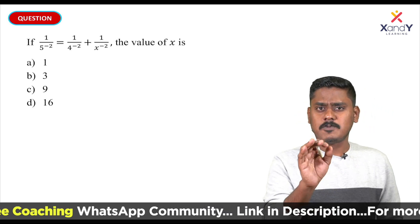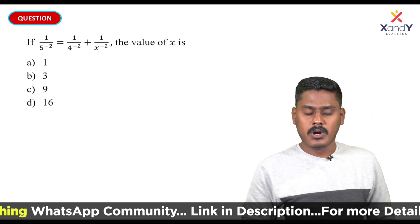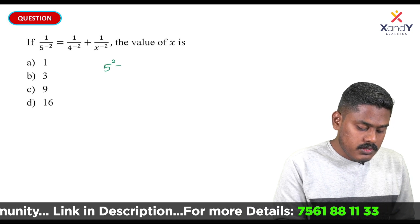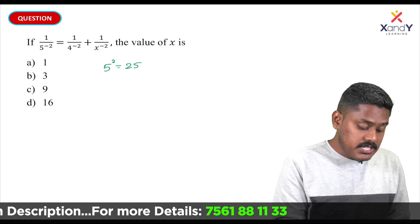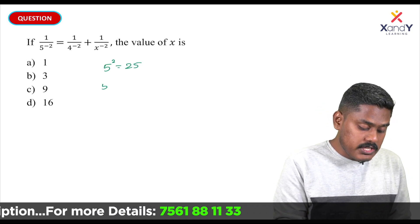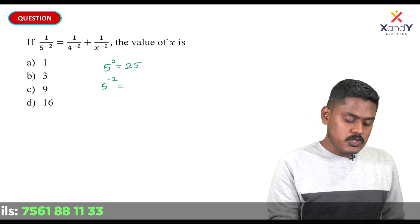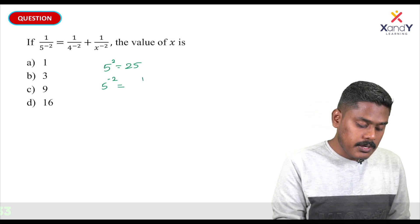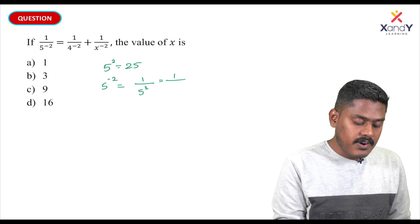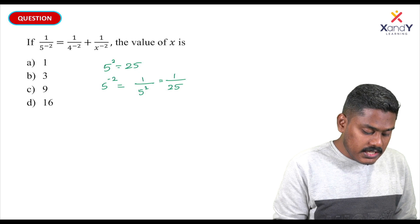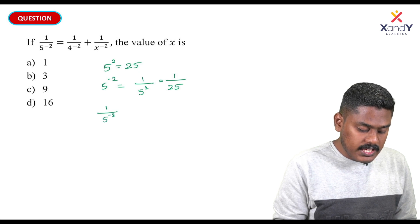Now, we are going to talk about negative exponents. 5 squared is 25. The value of 5 raised to minus 2 is equal to 1 by 5 raised to 2. So 5 raised to minus 2 equals 1 by 25, which means 1 by 5 raised to minus 2 equals 25.